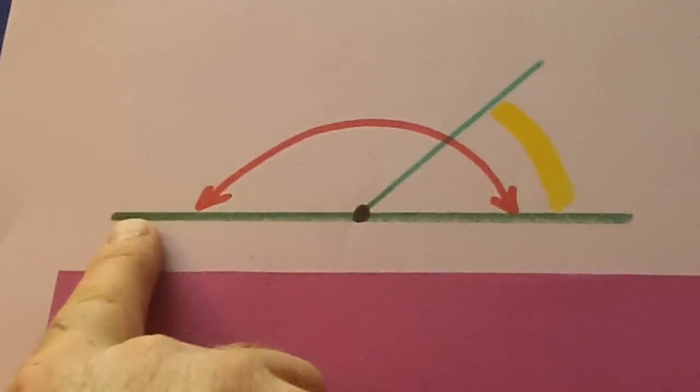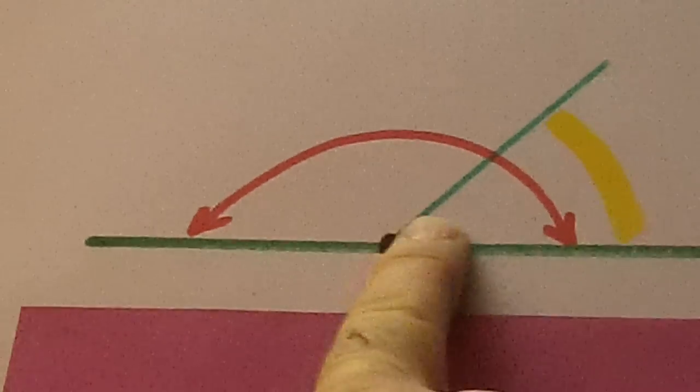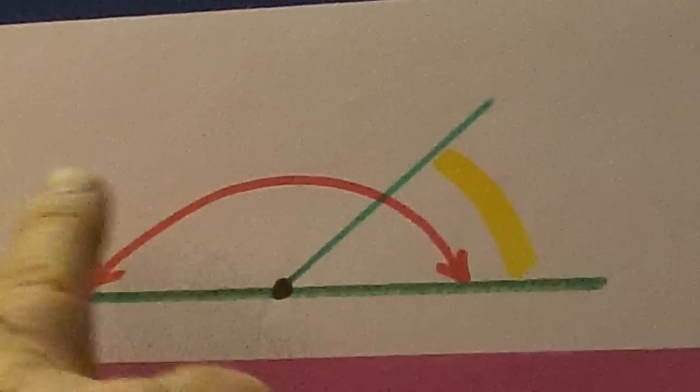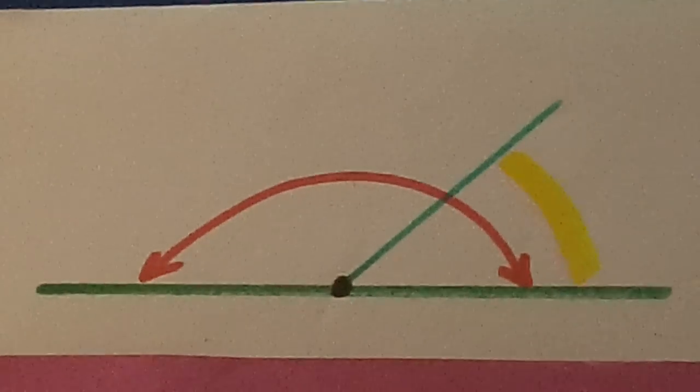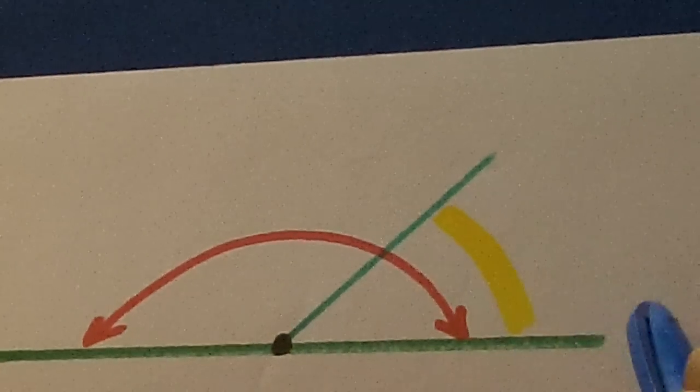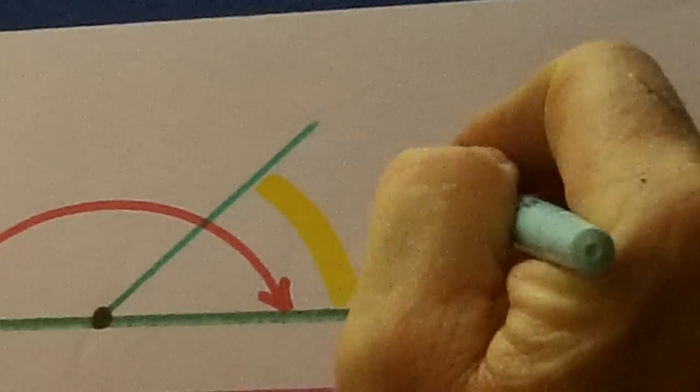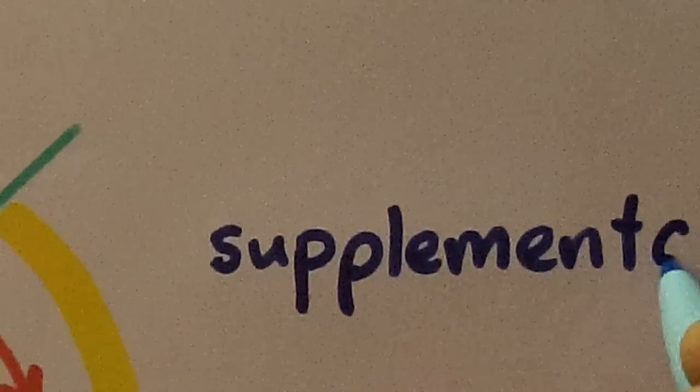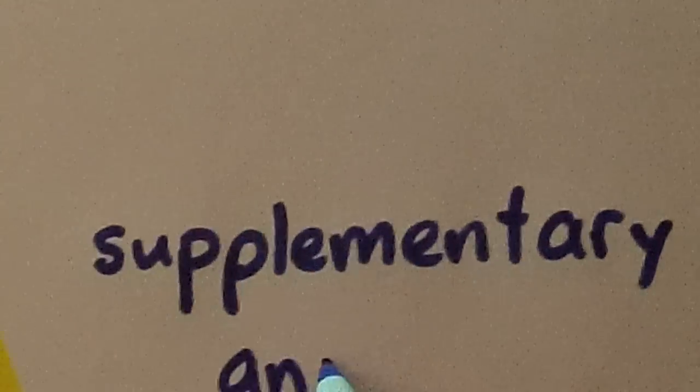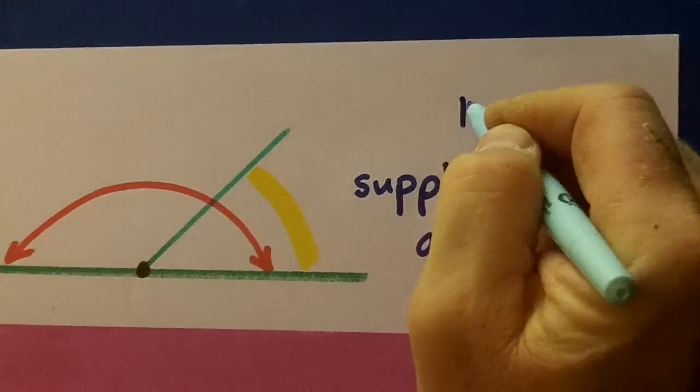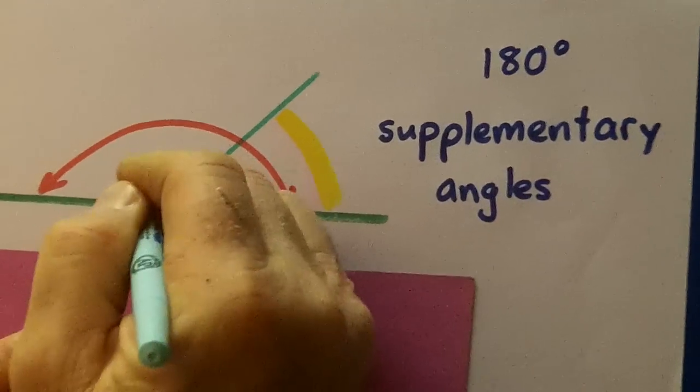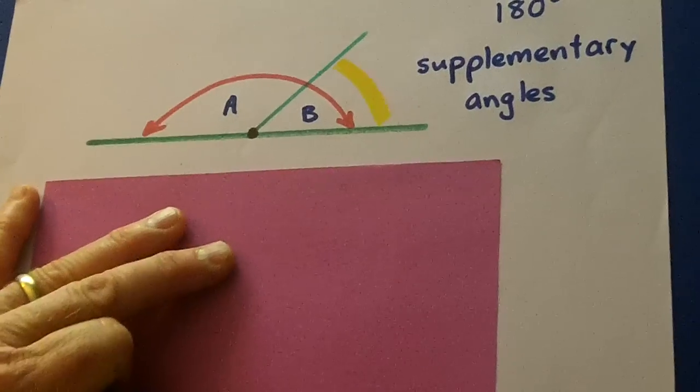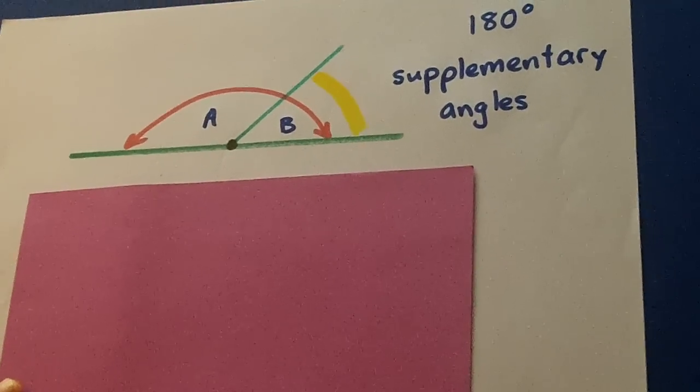Now, if we have two angles together that make a straight angle, here's one angle and then here's another angle, and together they make 180 degrees. Those two angles are called supplementary. These are supplementary angles. They add up to equal 180 degrees. So here's angle A, here's angle B. Together they're 180 degrees, so we say that they are supplementary.